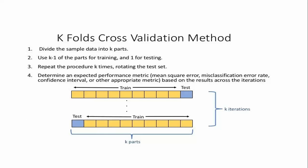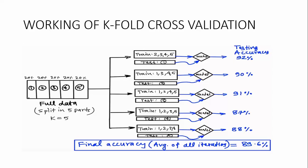Training will have more data than testing. This relates to different topics like underfitting and overfitting. The procedure for K-fold cross validation is repeated K times, rotating the test set each time. This is helpful in providing expected performance metrics such as mean squared error, mean misclassification error, and confidence intervals, which are evaluated based on the results of each iteration.